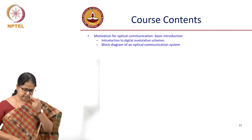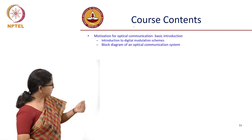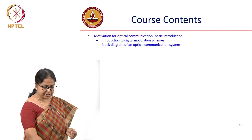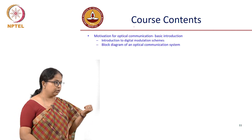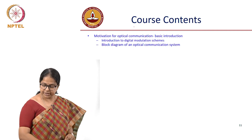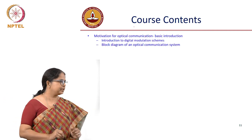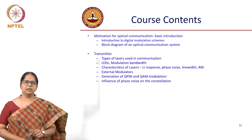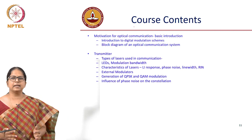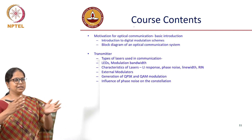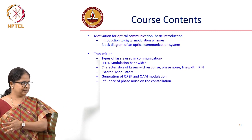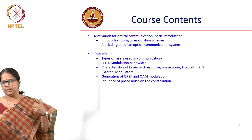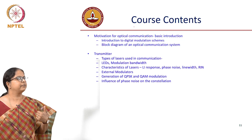The course content begins with motivation for optical communication and an introduction to digital modulation schemes — which we will do today. We will also see how a big block diagram of an optical communication system works. A block diagram will always have a transmitter, a channel, and a receiver. You transmit the signal, it propagates through the optical fiber channel, and a receiver demodulates and recovers the information.